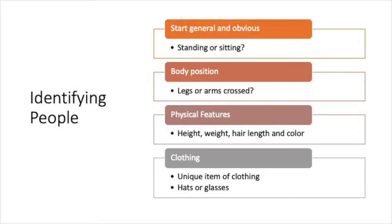After you identify the person's body position or location, look for other identifying features that stand out. Their height, their weight, hair color, hairstyle, or perhaps they're wearing a unique accessory like a hat or glasses.